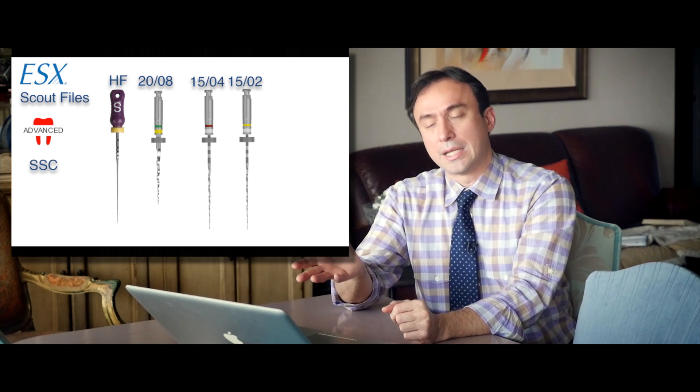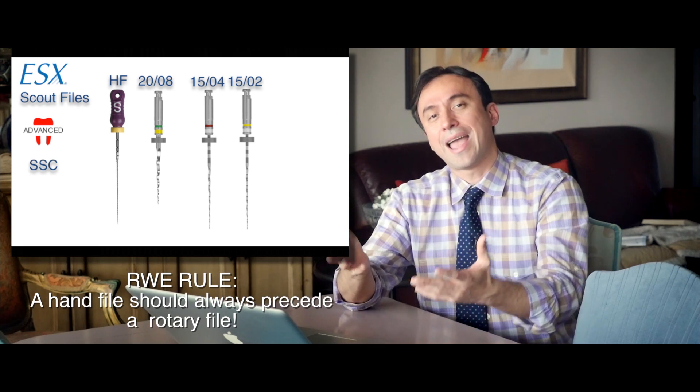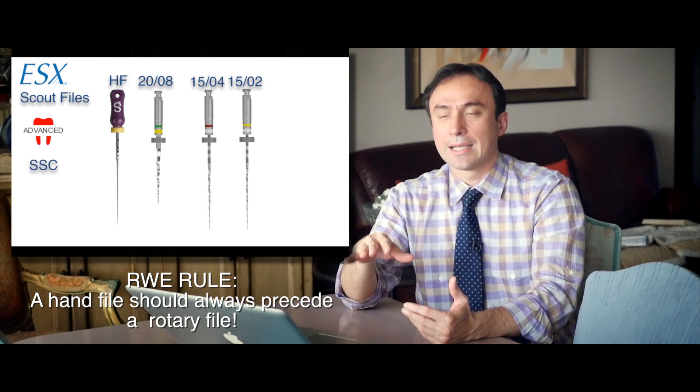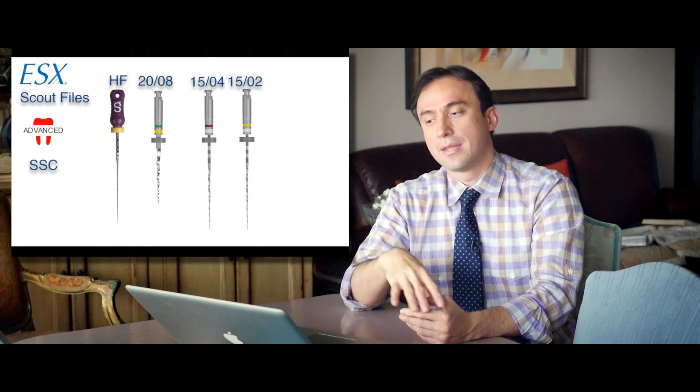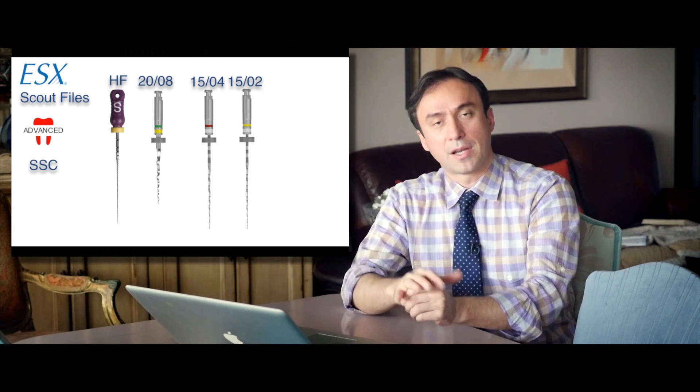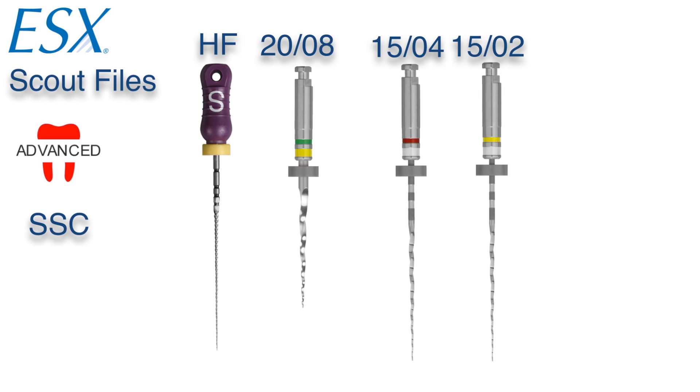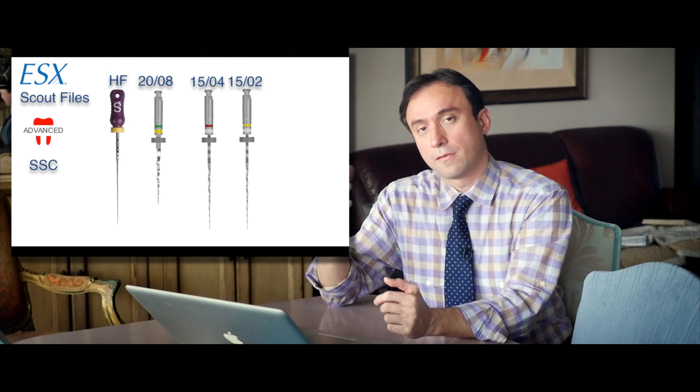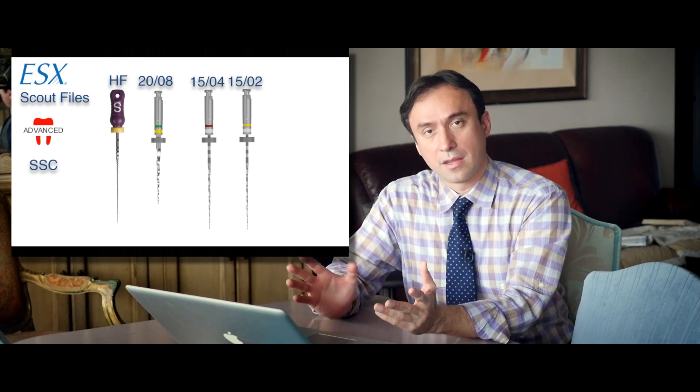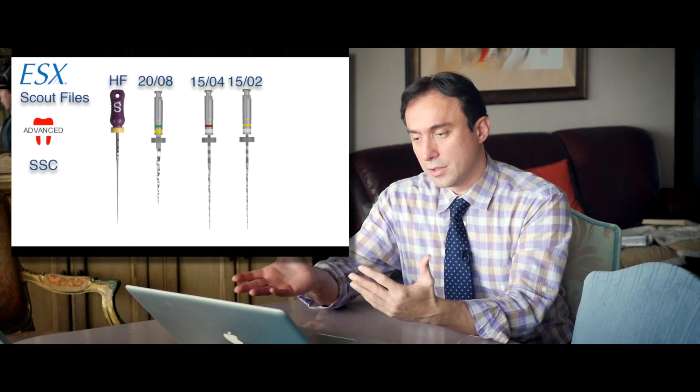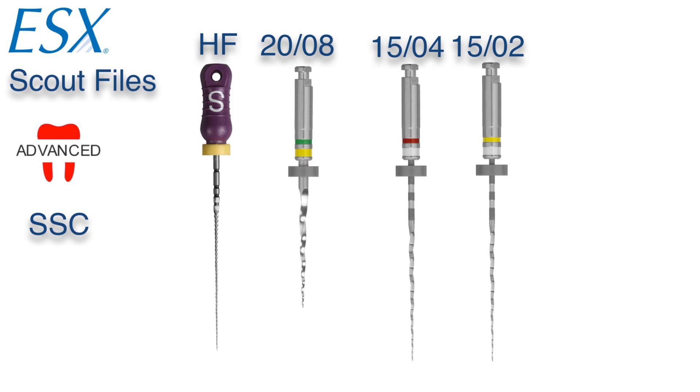And we believe at RealDendo also that you should always have a hand instrument precede a rotary instrument. So if you take a size 8 or a 10 hand file, then your size 1504 and a 1502 is going to be able to get down there much safer. So for the advanced protocol using the ESX file system, what we would recommend at RealDendo is to first open up into the chamber and identify the orifice of the canal, and you realize that it's tight and you realize that you're going to be using the advanced protocol instead of the basic protocol.